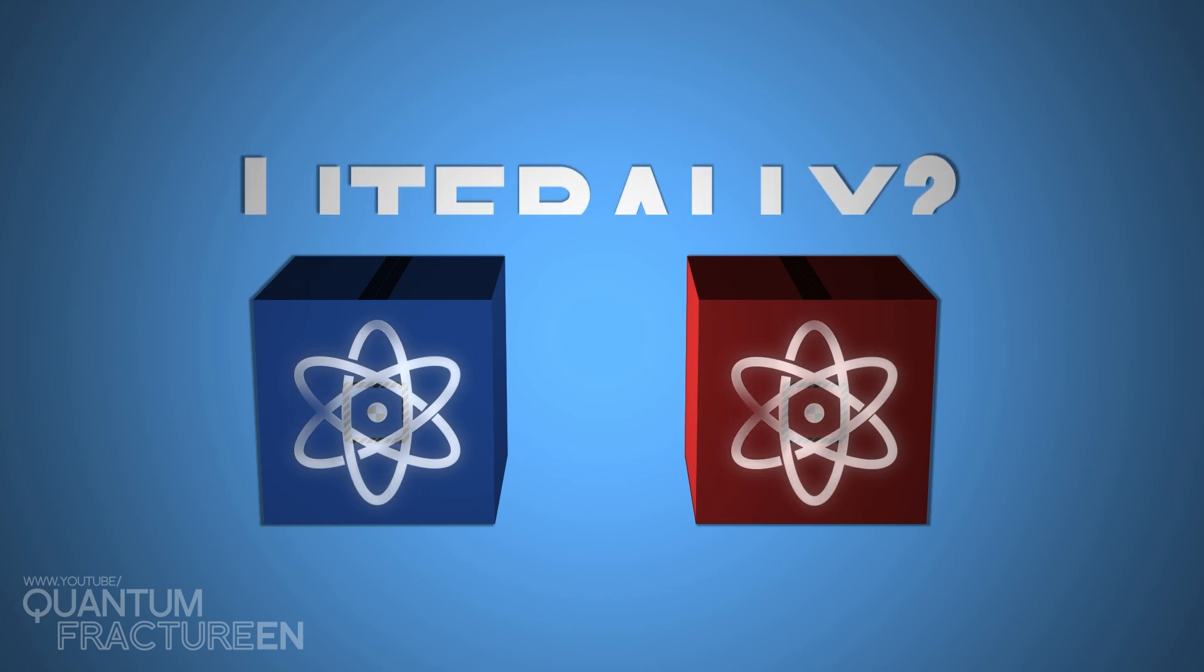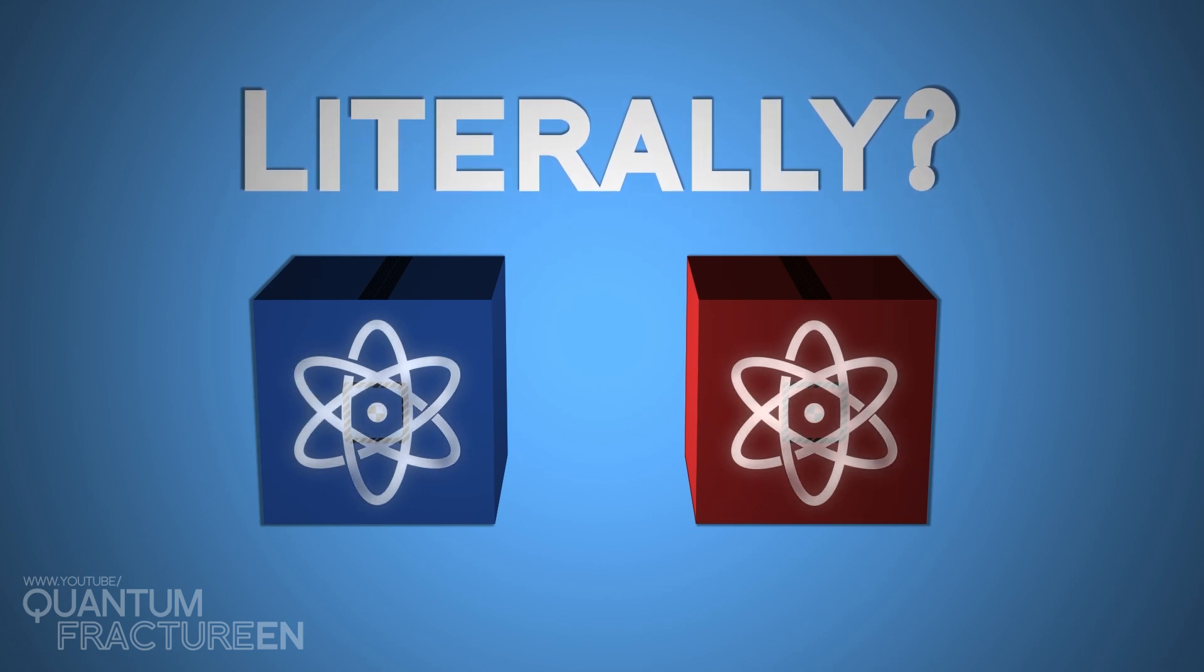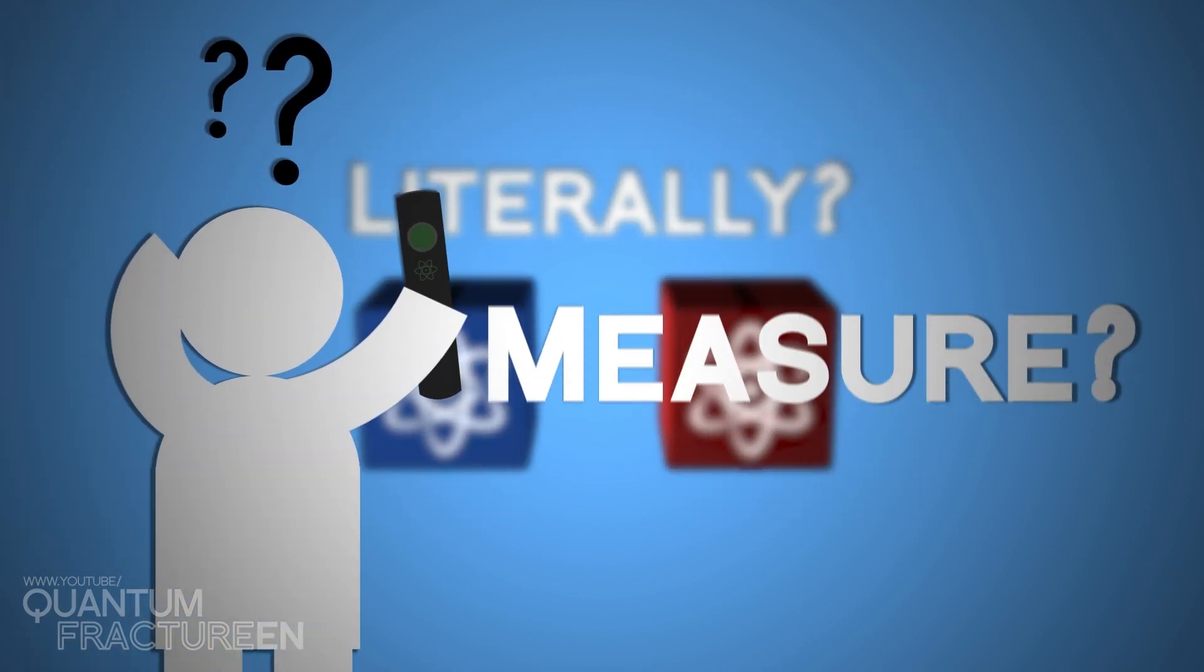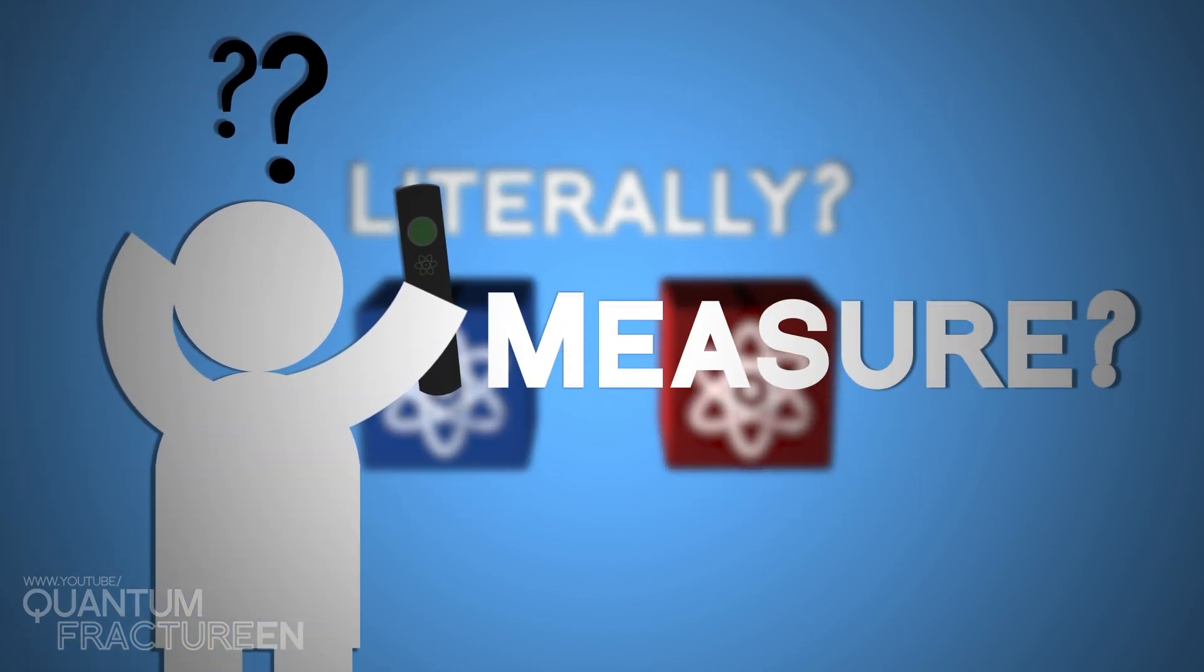For example, how is it that the atom appears to be in both boxes? Should we take this literally? And what do we, the observers, have to do with all this? What exactly does it mean to measure?